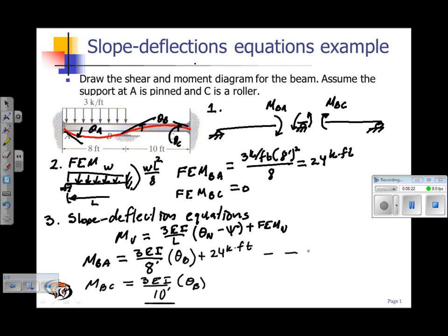This gives me two equations. At this point, those two equations involve three unknowns: M_BA, M_BC, and theta B. So I need an additional equation. The additional equation I'm going to use in this case is the equilibrium equation at joint B. So let's do that.